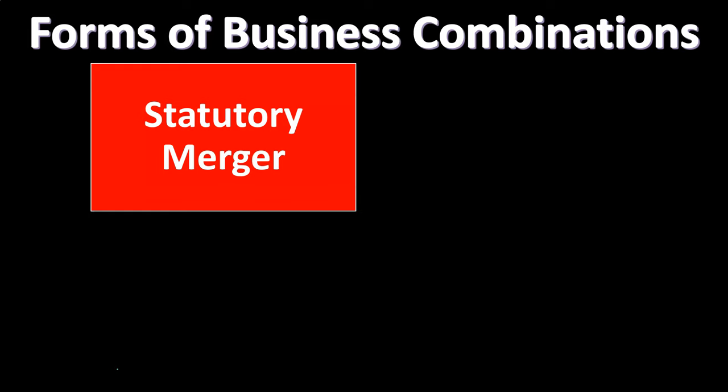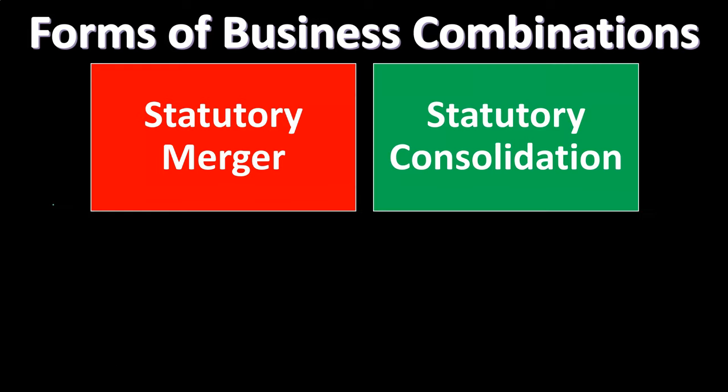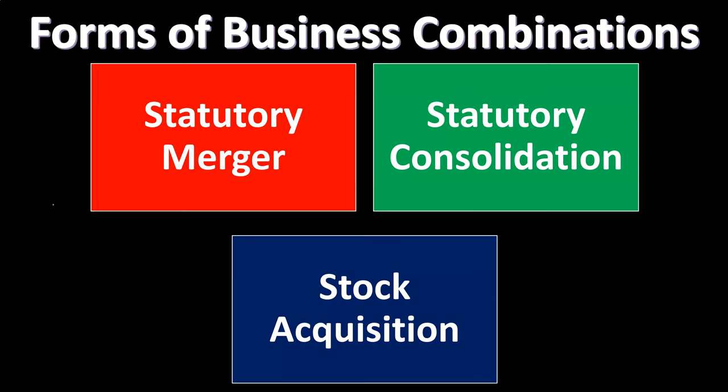We're talking about two separate legal entities that are now going to be combined in some way, shape, or form. The forms of business combinations can be the statutory merger, the statutory consolidation, and the stock acquisition.